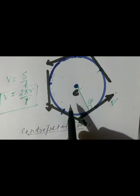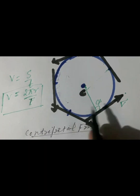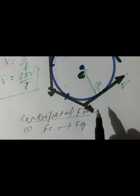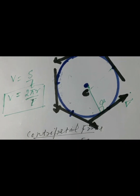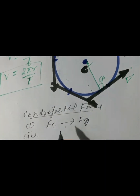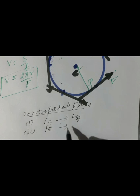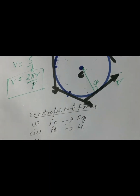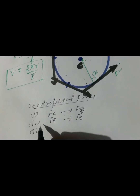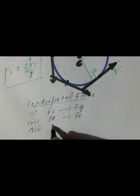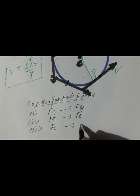In different cases, the centripetal force has a different origin. As the Earth revolves around the Sun, the centripetal force is provided by gravity. As the electron revolves around the nucleus, the centripetal force is provided by electrostatic force, also called Coulomb's force. If a stone is tied to a string and whirled, the centripetal force is provided by tension.